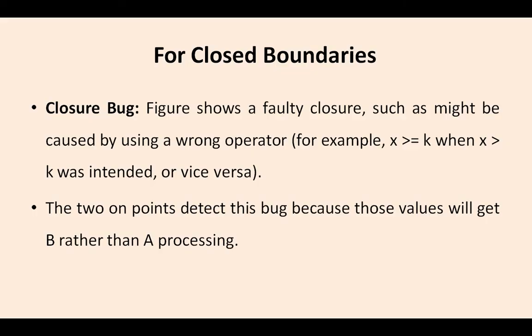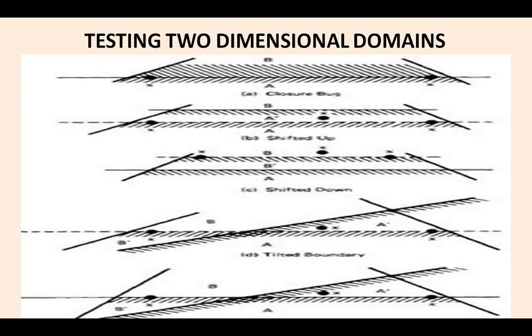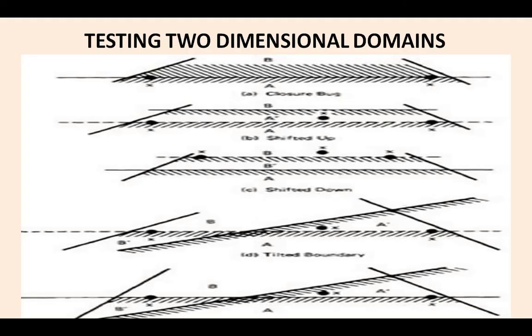For two-dimensional domains with closer boundaries, what kinds of bugs do we normally encounter? Closer bug — the figure shows a faulty closure such that it causes a wrong operator. Two on-points detect this bug because those values will get B rather than A processing. A closure bug is one of the bugs which is a faulty closure. Whatever points B and A are, they only can detect that particular bug.